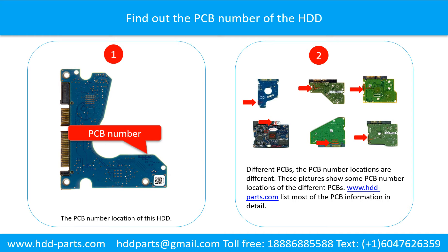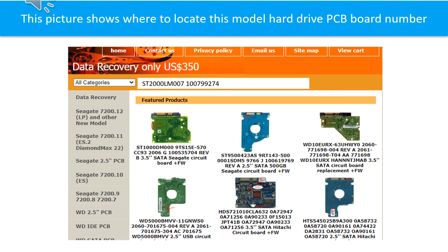Different printed circuit boards have different PCB number locations. If you want to find out your own PCB number, you may go to www.hdd-parts.com, which lists most of the PCB information in detail. In the search box, input the hard drive model number and the PCB number, then search.